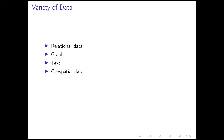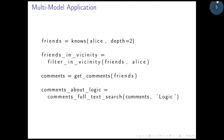What you might first do is combine these different databases in the application. For example, if you want to query for all the friends of Alice who are talking about logic, it might look like this. You start off with querying for all the friends of Alice — not only the direct friends, but also extended friends, searching here for a depth of two. This seems to be some kind of a graph query. You then filter by friends in the vicinity of Alice — a geospatial query. You retrieve the comments, which seems to be a relational query. And finally, you do a full text search on all the comments you receive for the term logic to answer your query.